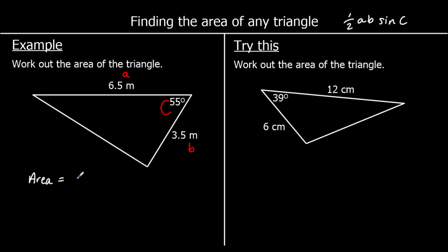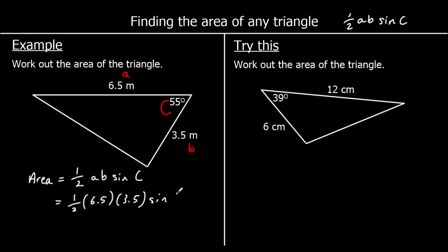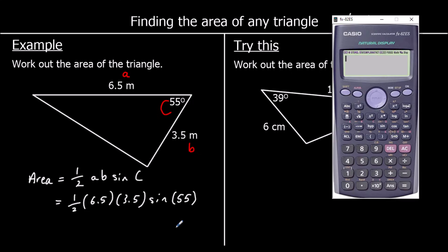So let's look at this first example. The area is going to be given by half AB sin C, and that's half times 6.5 times 3.5 sin 55. All we have to do is type it into the calculator — half times 6.5 times 3.5 sin 55 — and that gives an answer of 9.32 to two decimal places.